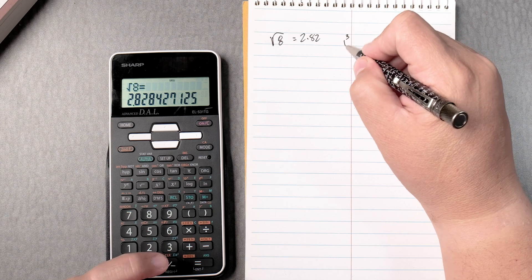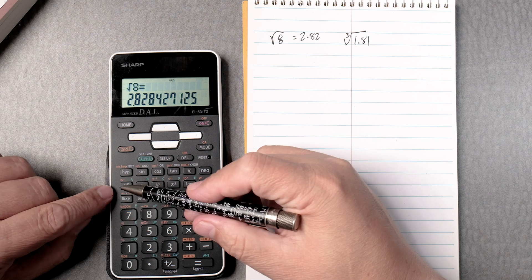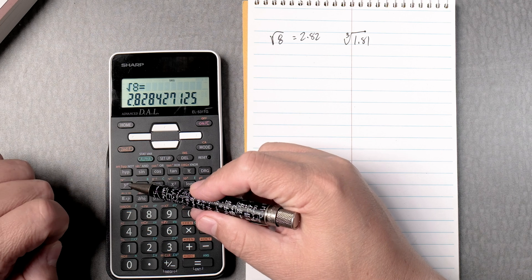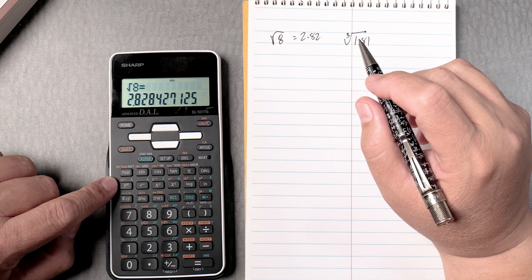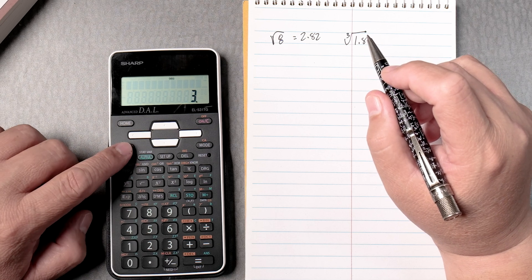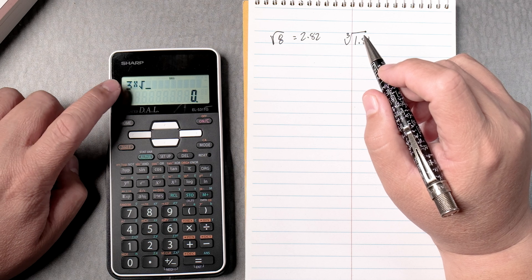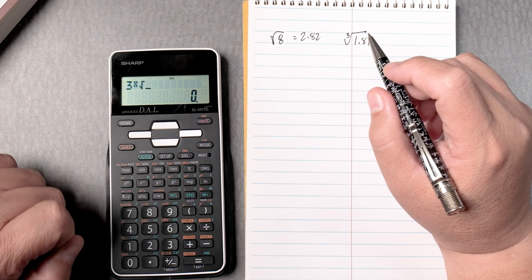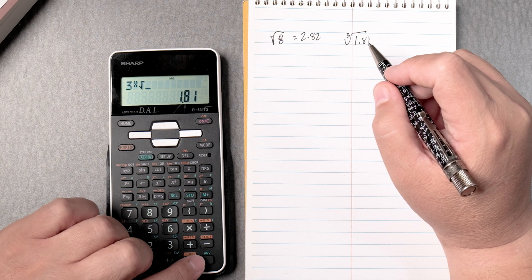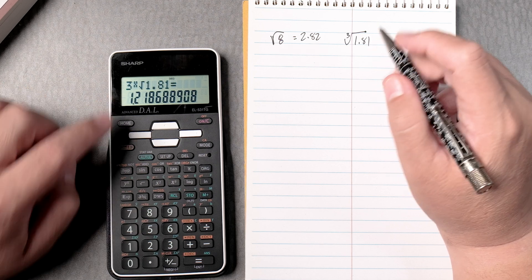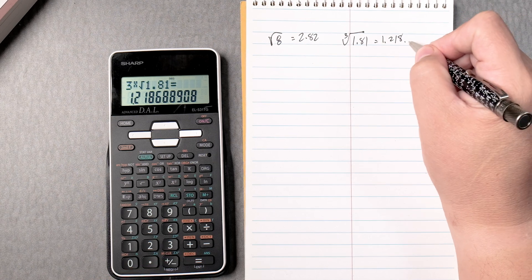Let's say you want to do the third root of 1.81. That will be right over here above the y, x key. It's an orange. So we put 3 first and then second, y to the x key. So you can see it's 3, goes in that spot where the x is 1.18. Then we press equals and it shows us that the answer is 1.218 and so forth.